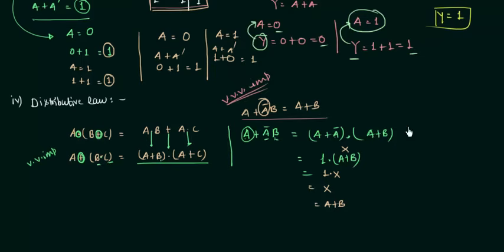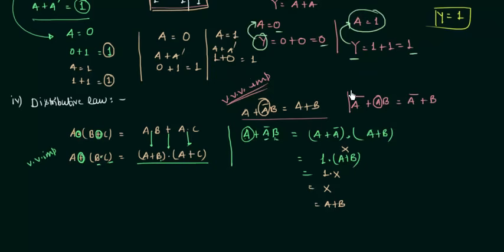There is one more form of this type: if we have a' OR (a AND b), we eliminate the a and simply get a' OR b. These two simplification patterns are essential to keep in mind while solving Boolean algebra problems.